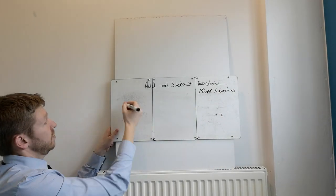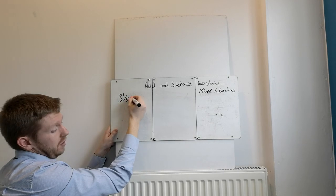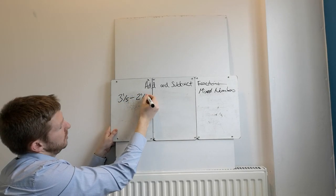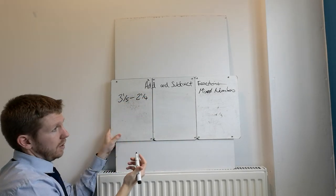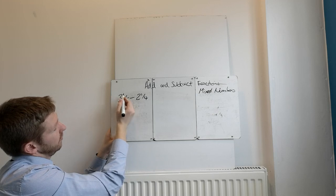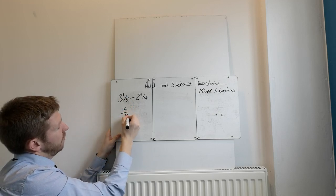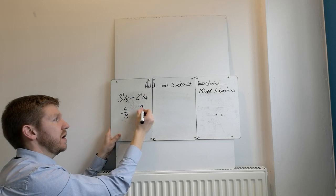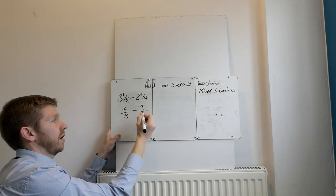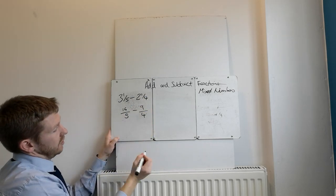So let's try it as a subtraction one. Say it's 3 and 1 fifth take away 2 and 1 quarter. So again, make them improper fractions. 3 times 5, 15 and the 1, 16 over 5. 2 times 4, 8 and the 1, 9 over 4. Subtract. Denominators aren't the same. We need to make them the same.